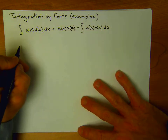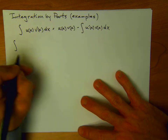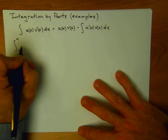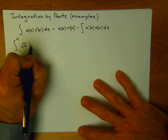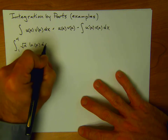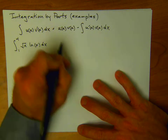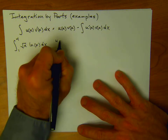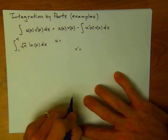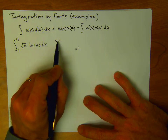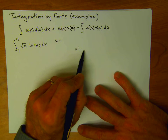Here's another example. I'm going to take a definite integral — the integral from 1 to 4, or the area under the curve, of the square root of x times the natural log of x. So again, the first thing we need to do is identify what u is and what v prime is.